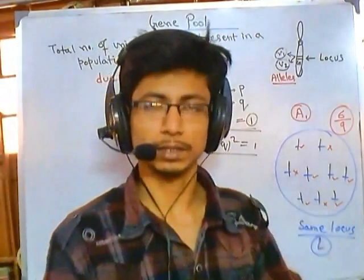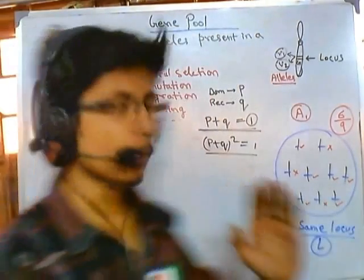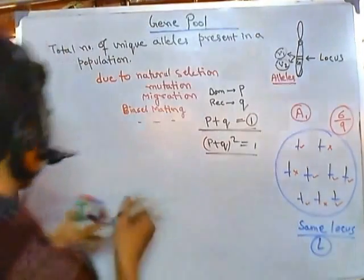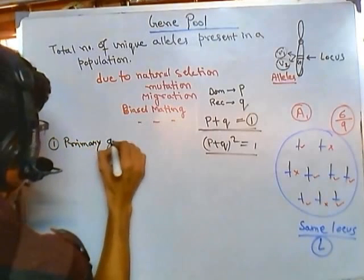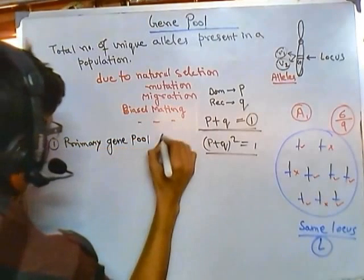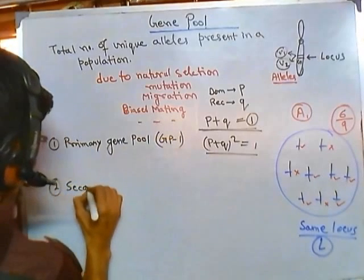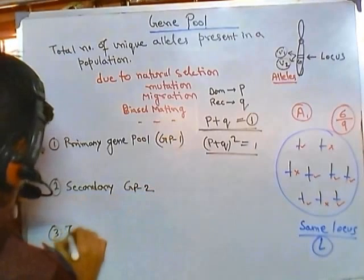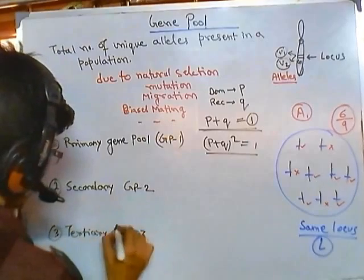Depending upon the type of gene pool, we can divide it into three different parts: the primary gene pool (GP1), the secondary gene pool (GP2), and the tertiary gene pool (GP3).